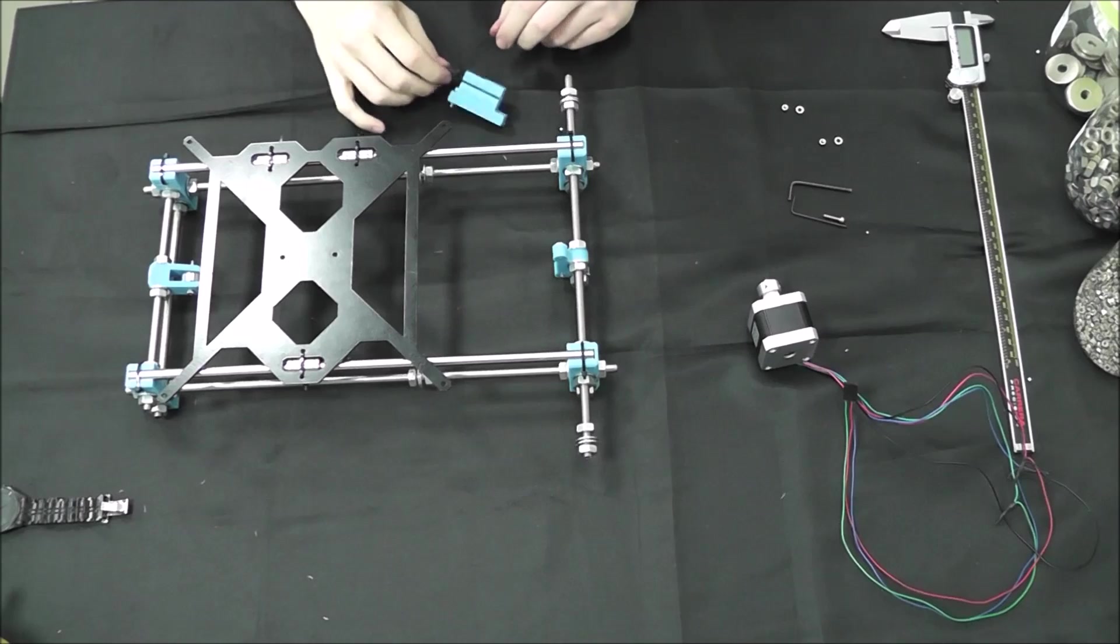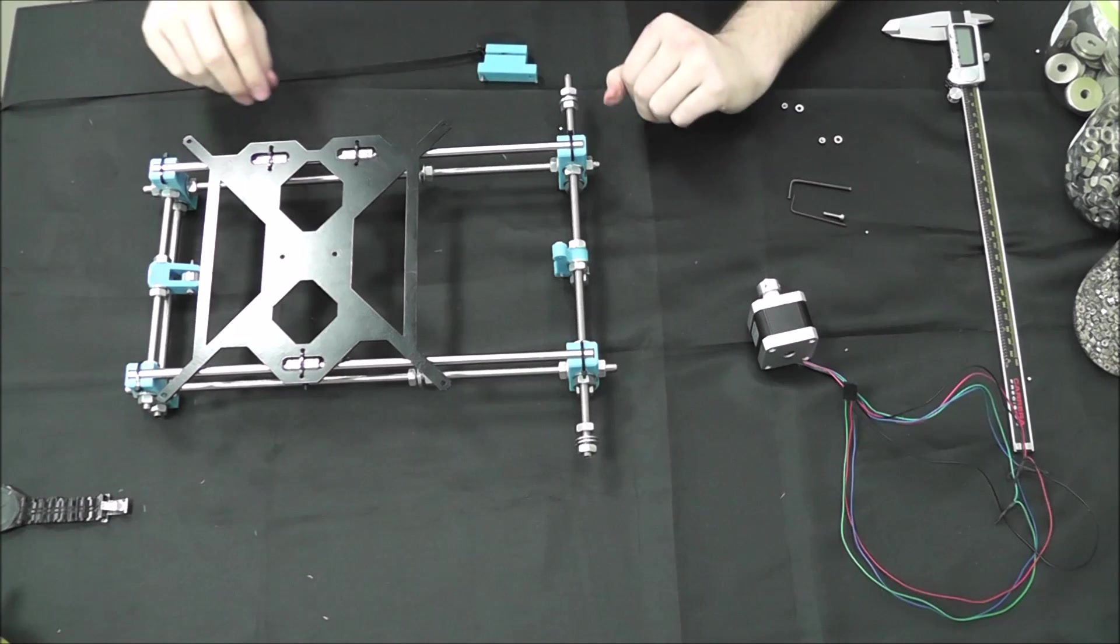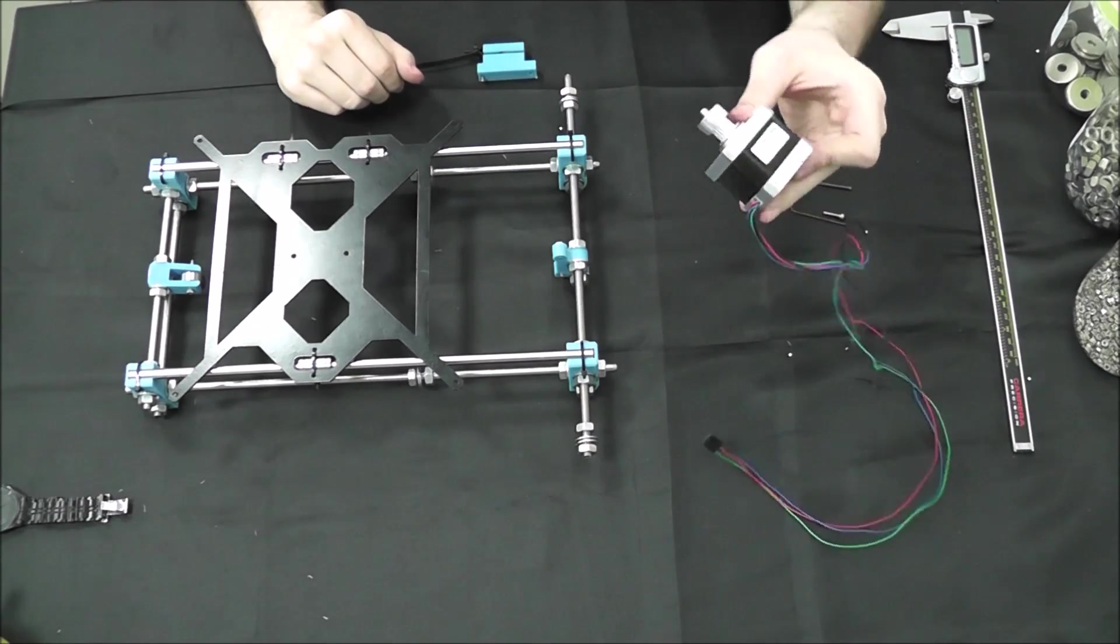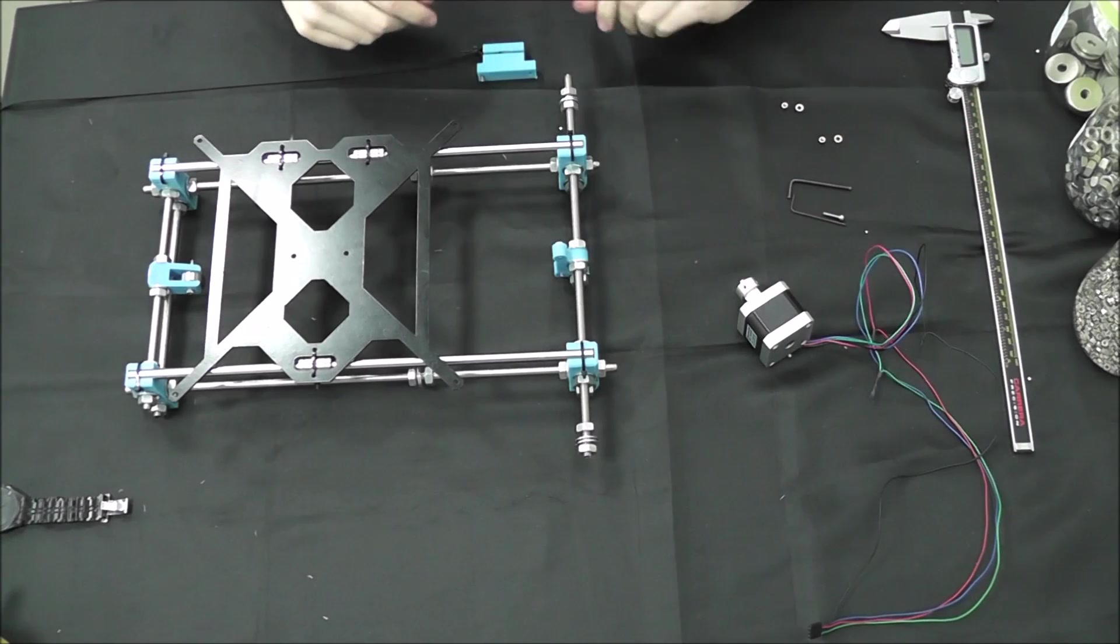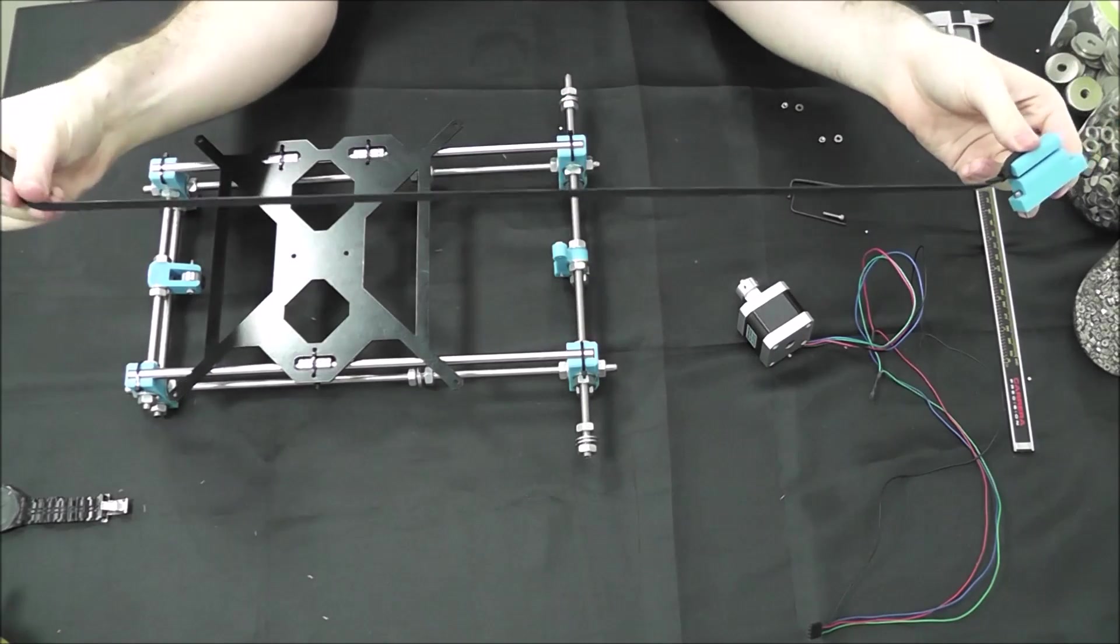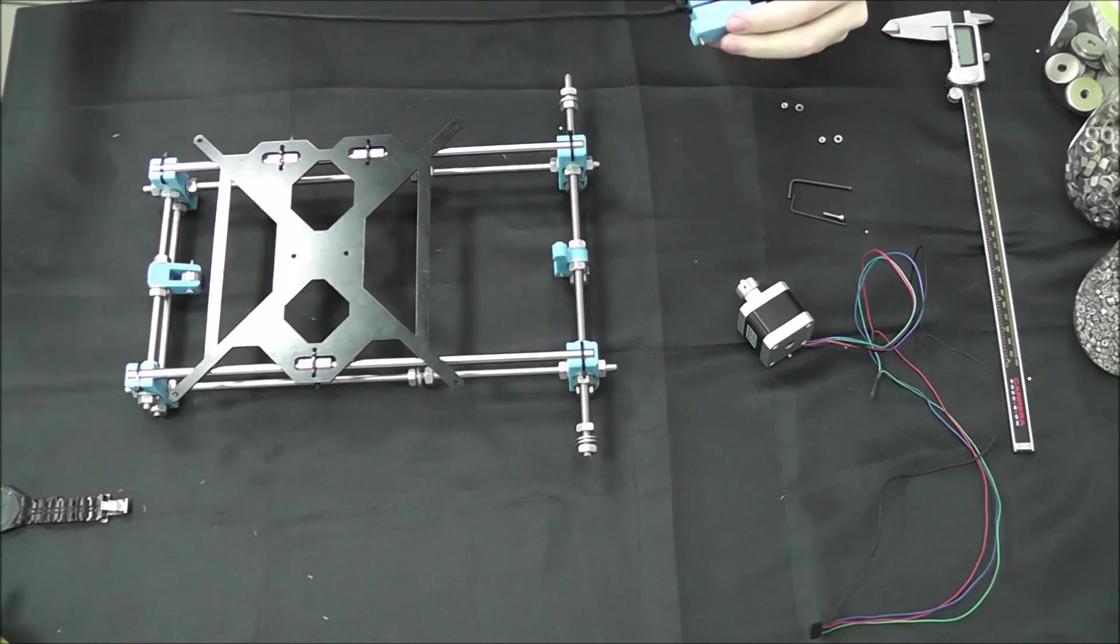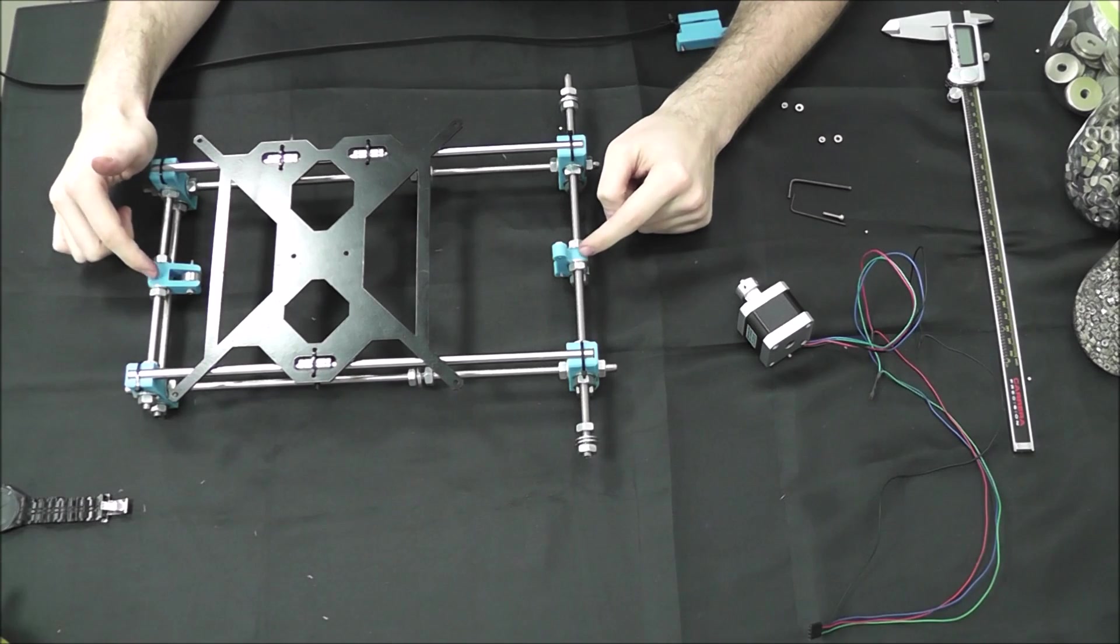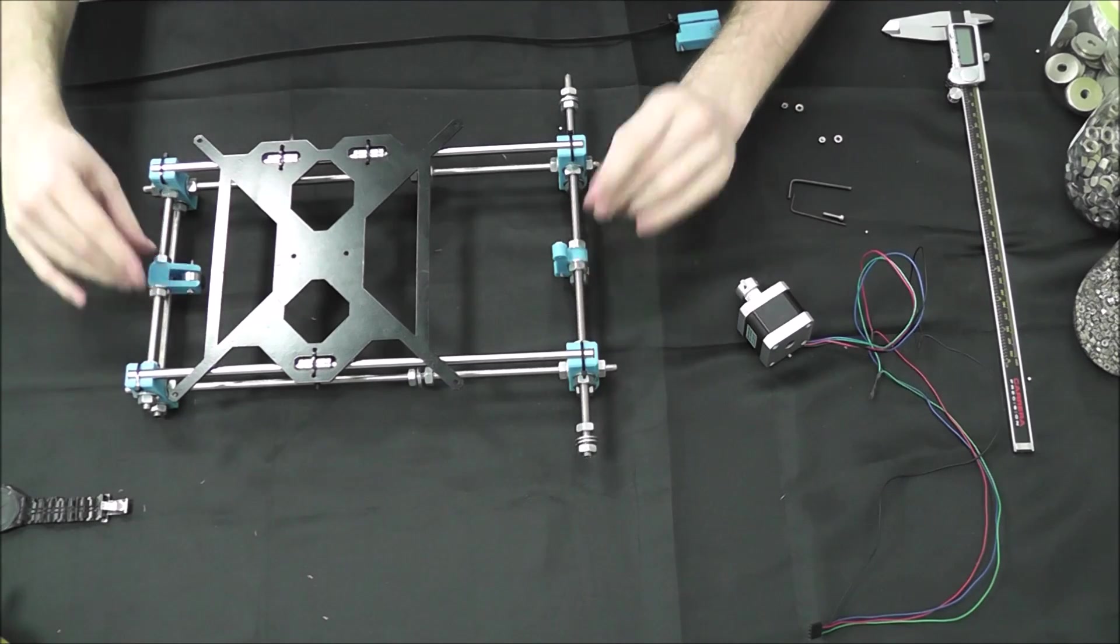All right so we're going to take a second here to attach the belt to the Y drivetrain to give some movement to the Y axis. So what we're going to need is our assembled Y axis, a NEMA 17 stepper motor with a GT2 timing belt pulley, a Y belt holder, and a GT2 timing belt cut to about 700 millimeters. Distance can be adjusted. What we need to keep in mind before we start this is that these two pieces need to be exactly lined up and the spaces between them need to be exactly the same. So let's get started.